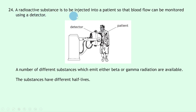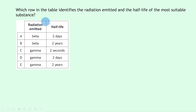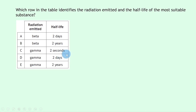Question 24 asks for the most suitable radioactive tracer for monitoring blood flow. For tracers, gamma radiation is required because it can penetrate through the whole body to reach the external detector. For half-life, two days is most suitable — long enough to take readings but not so short (two seconds) that it decays before detection, and not so long (two years) that it remains at a harmful activity level. The answer is D: gamma radiation with a two-day half-life.